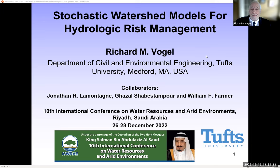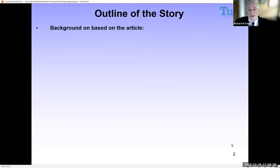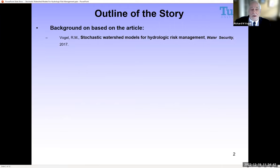Thank you very much for the opportunity to give my talk on stochastic watershed models for hydrologic risk management. This is a topic I've been working on for quite some time, along with a few colleagues: John LaMontagne, my replacement on the faculty at Tufts, along with his PhD student Ghazal Shavastin Ampour, and one of my previous PhD students who's at the U.S. Geological Survey, Will Farmer. I've been working on this problem because, in my opinion, the future of our field depends on the idea I developed in a 2017 article of using stochastic watershed models to enable risk-based planning — it's a central feature of our field.